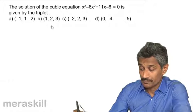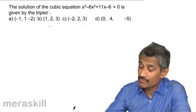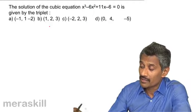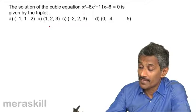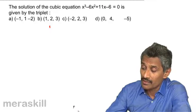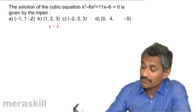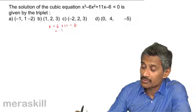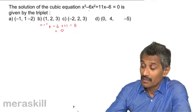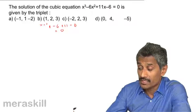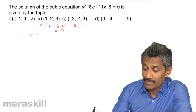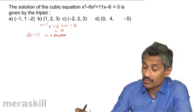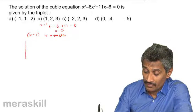For x³ - 6x² + 11x - 6 = 0, there doesn't seem to be any obvious common factor. Putting x = 1: 1 - 6 + 11 - 6 = 0. Since the polynomial equals 0 at x = 1, that means x - 1 is a factor. So we proceed with synthetic division.